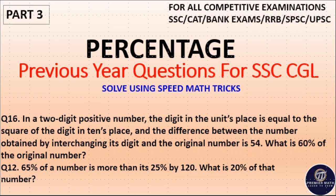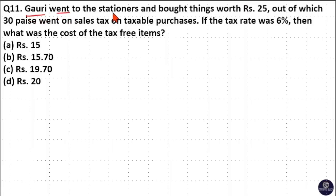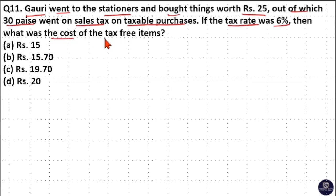Our first question is: Gauri went to the store and bought things worth Rs 25, out of which 30 paise went on sales tax on taxable purchases. If the tax rate was 6%, then what was the cost of tax-free items? Here 30 paise is for sales tax and the tax rate is 6%.